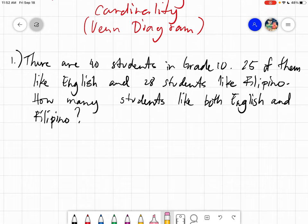So firstly, let's look at the given. Yung unang set natin is 40 students. We are not very particular sino-sino ba yung mga 40 students. We are just stating that all in all for the whole grade 10, there are 40 students. So we can consider the grade 10 as our universal set, which is of course ang cardinality ng ating universal set is 40.